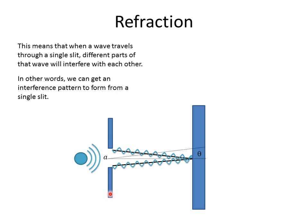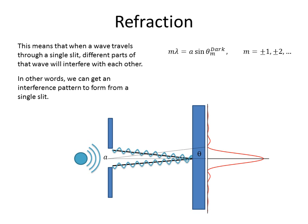We can set up our single slit this time. We have our angle theta, depending on where we're looking along the wall. If the light comes straight in, we're still going to get a maximum in the middle. However, the pattern we're going to get will have this intensity curve — the middle is going to be really bright, but we're going to get these bumps again, this interference pattern.